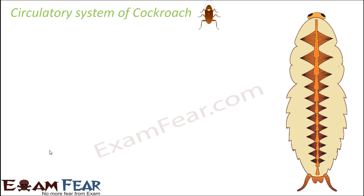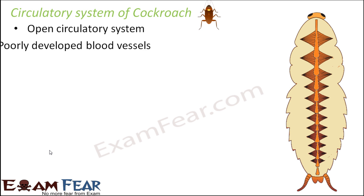Now we know how digestion of food materials takes place inside a cockroach. As mentioned previously, for all members of Arthropoda the circulatory system is open type. That means blood is not confined to tube-like structures called vessels — blood is scattered throughout the body. The blood vessels are not distinct, giving it an open circulatory system with poorly developed blood vessels.